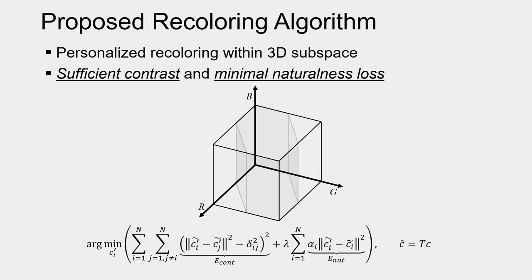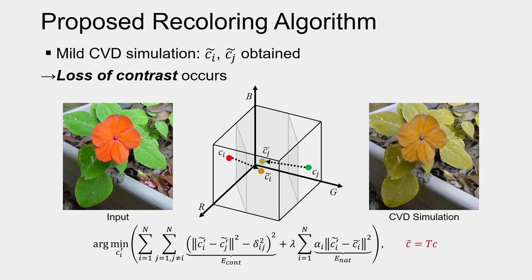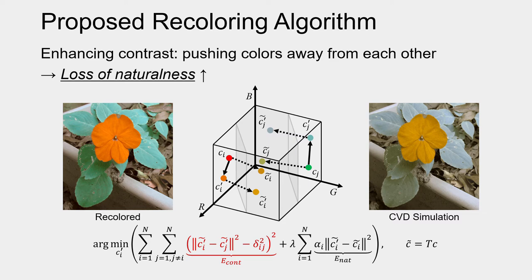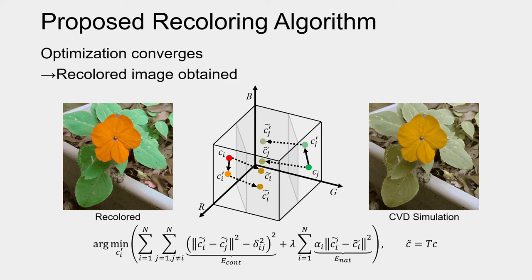The algorithm aims at providing sufficient contrast to CVD users while minimizing loss of naturalness. Given two colors C and C in the input image, after being projected into the color gamut of CVD, the distance between the simulation of the two colors may be shortened and loss of contrast occurs. For contrast enhancement, colors are pushed away from each other. However, this increases the loss of naturalness. For naturalness preservation, colors should be pulled back. Finally, the optimization converges and the recoloring result can be obtained.